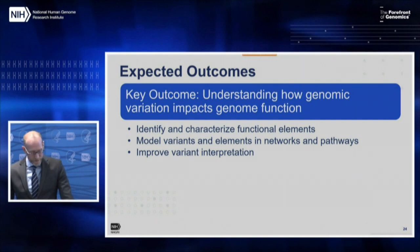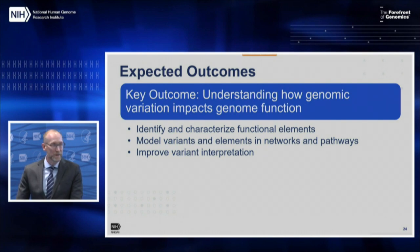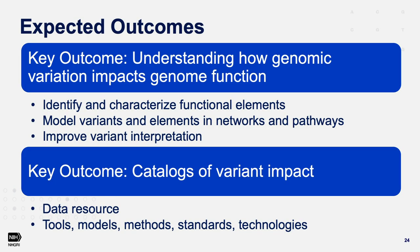A number of significant outcomes are envisioned for the program, focused on advancing understanding of how function is impacted by variation and leads to phenotypes. Movement in this direction will be aided by identifying and characterizing functional elements—when and where they're active and how genomic variation impacts their function—and modeling variants and elements and how they contribute to different networks and pathways. Towards improving variant interpretation, a key part envisioned for the program will be catalogs of the impact of genomic variants on function and phenotype, shared with the community as openly as possible.